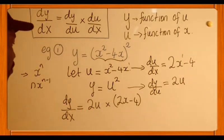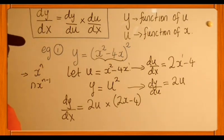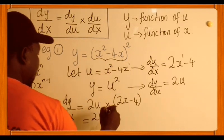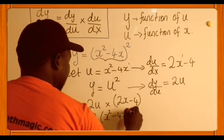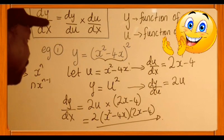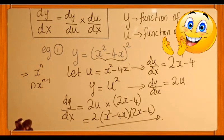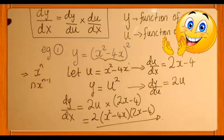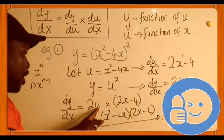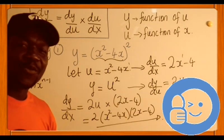This is not our final solution because we have u. We have to go back to our substitution so we end up with something in x alone. So substituting u: this is 2 times (x squared minus 4x) times (2x minus 4). So this is our first example. Importantly, make sure you make the substitution — let u be equal to the inside function. Differentiate each expression, substitute into the formula, and don't forget to substitute back for u, because we want dy/dx with no u remaining.